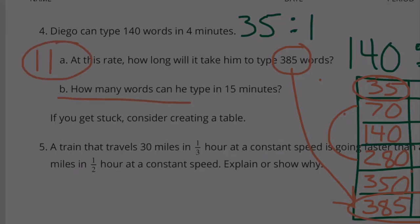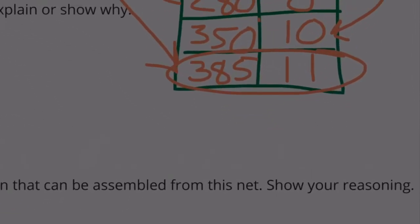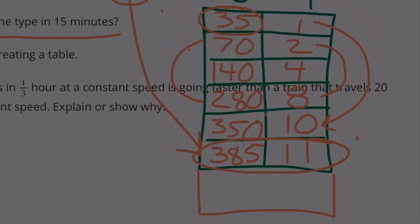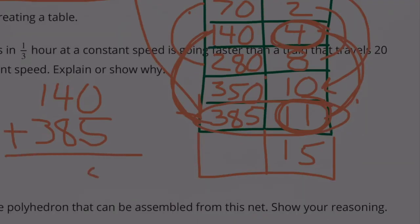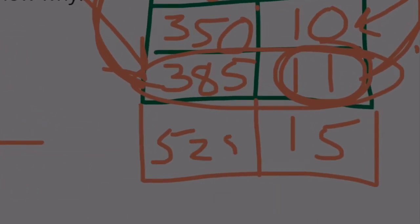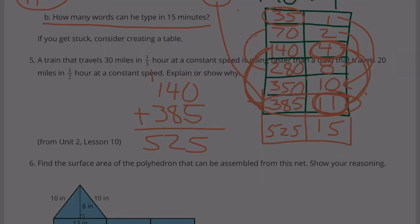Part B: how many words can Diego type in 15 minutes? If we add 4 to 11 we get 15 minutes, and adding 140 to 385 gives us 525. So in 15 minutes, Diego can type 525 words.